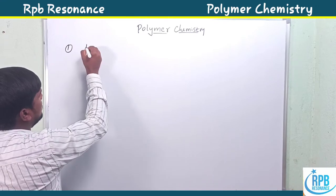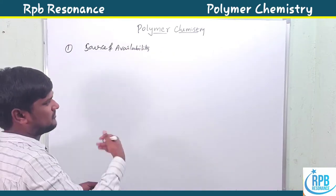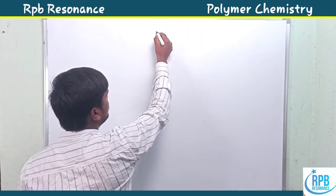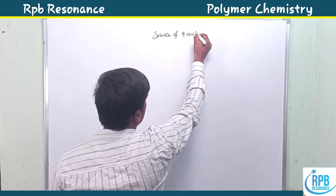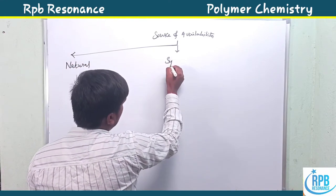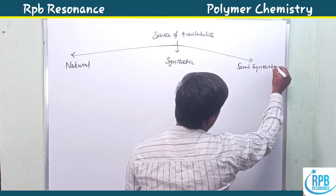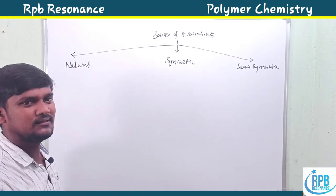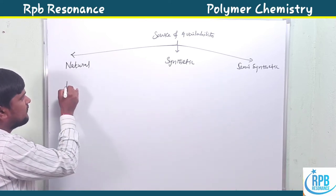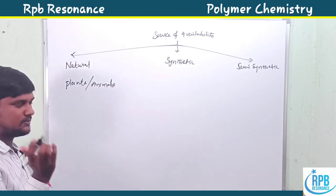The first classification is based on source of availability. It is classified into three types: natural polymers, synthetic polymers, and semi-synthetic polymers. Natural polymers are obtained from natural sources like plants or animals. Examples include starch and cellulose, which are polymers of glucose.